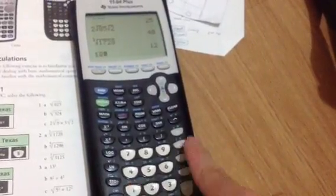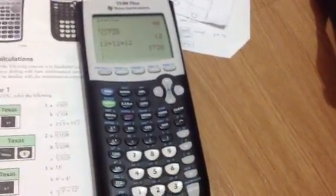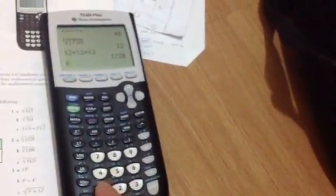Let's check if that's right: 12 times 12 times 12. That's 1,728. Another way you could do it is 12...